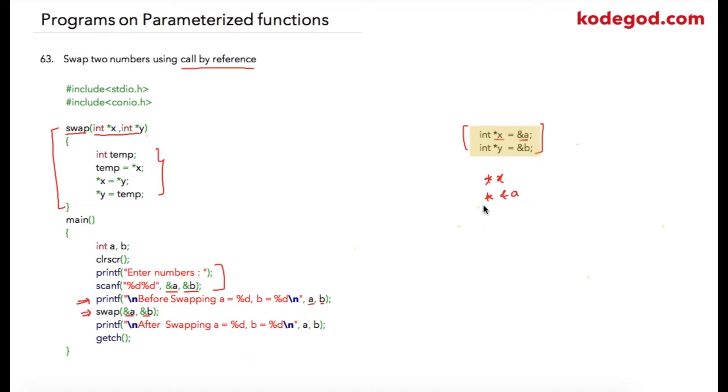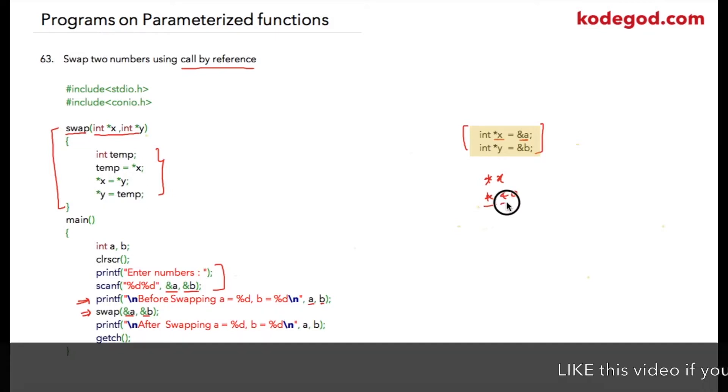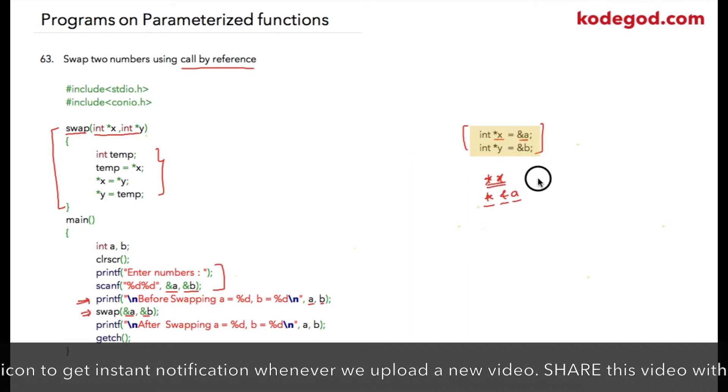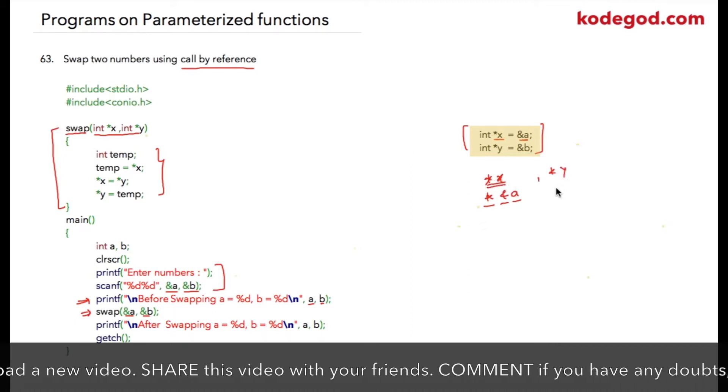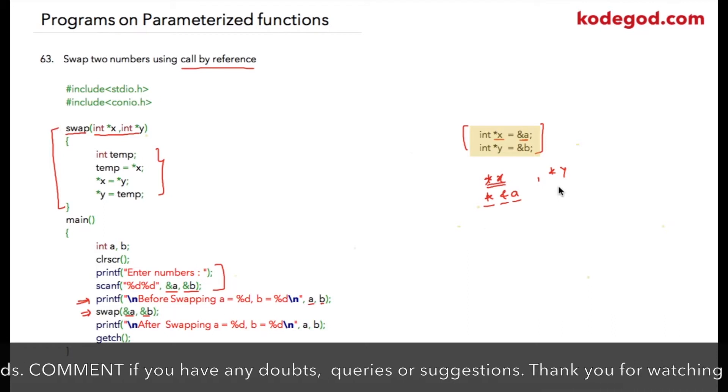And we have seen in the lectures on pointers, we can call it as value at address of a. So whatever the value that a is can be referred as star x.